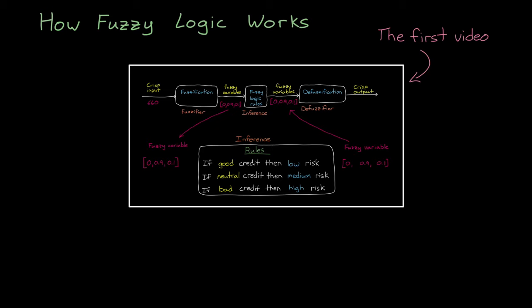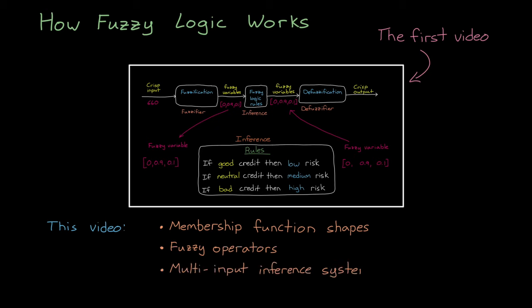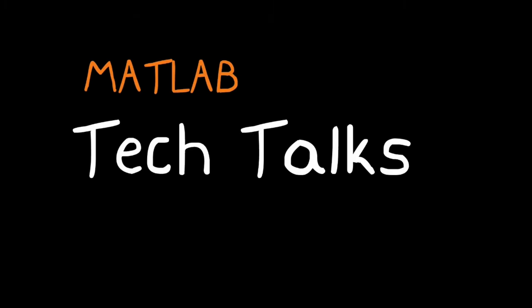In the last video, we covered an overview of a fuzzy inference system and the basic mechanics of how it all works. In this video, I want to continue that discussion by walking through a slightly more complex example because it's going to allow us to talk about some important concepts that we missed in the last video, namely membership function shapes, fuzzy operators, multiple input inference systems, and rule firing strength. So I hope you stick around for it. I'm Brian, and welcome to a MATLAB Tech Talk.